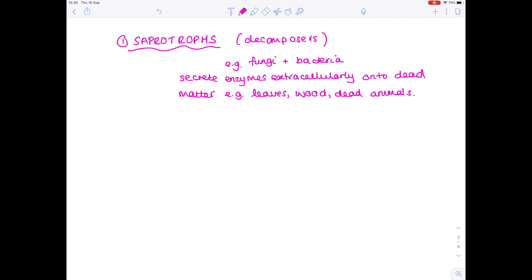The first one is the saprotroph. So here's a summary of saprotrophs. Notice they are named as decomposers, and included in this group are both the fungi and bacteria.